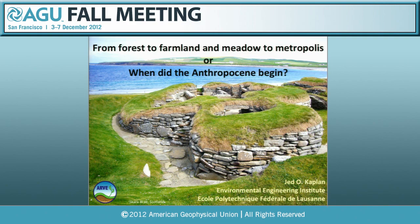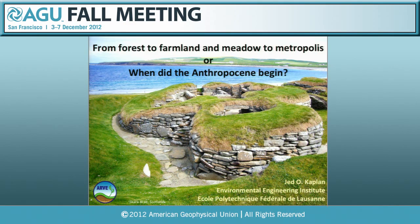Thanks everyone for coming, and thank you for the opportunity to talk today. I changed the title of my talk a little bit — I thought I'd try to be a little provocative and give you some food for thought about when did the Anthropocene begin. I'm not going to try to answer that question, but I want to talk about human impacts on large-scale landscapes over the last several millennia. This is Skara Brae in Orkney, an island off the north coast of Scotland — a Neolithic site where people were farming about 5,000 years ago. This is a pretty harsh, pretty remote place — way out at the northwestern corner of Europe — and so people were already farming in the remotest corners of the known earth more than five millennia ago.